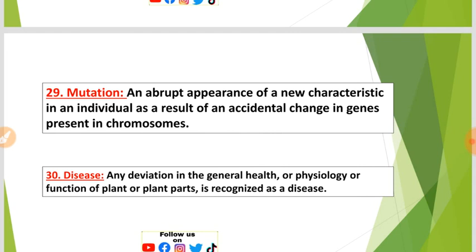Number twenty-nine: Mutation — the appearance of a new characteristic in an individual as a result of an accidental change in genes present in chromosomes. Genes always present in chromosomes.